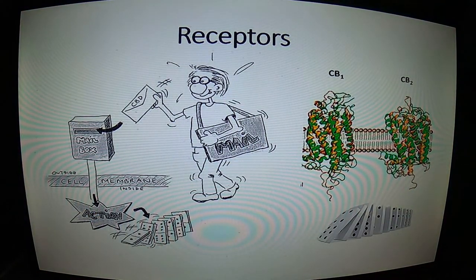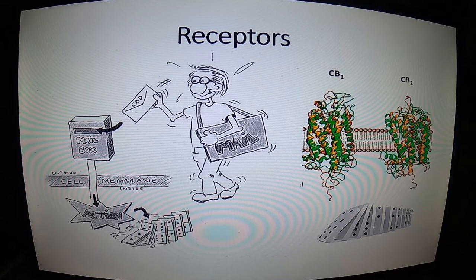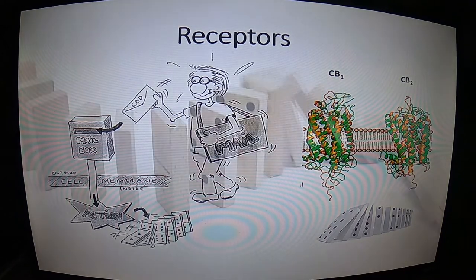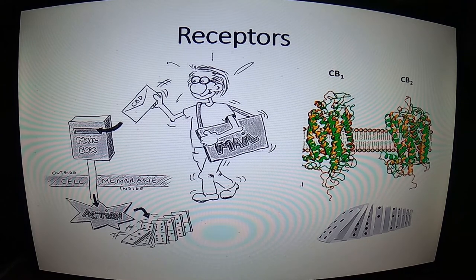So let's talk about receptors — the keyholes. If you put the right plant compound into the right receptor, something will happen or be blocked. This is illustrated by a mailbox cartoon from my book, The Power of CBD and Essential Oils. When a letter that fits goes into the mailbox, it pushes down through the cell membrane and triggers a signaling pathway — like a row of falling dominoes. In the beginning, everybody thought it was all about CB1 and CB2 receptors, but we've since learned a lot more.